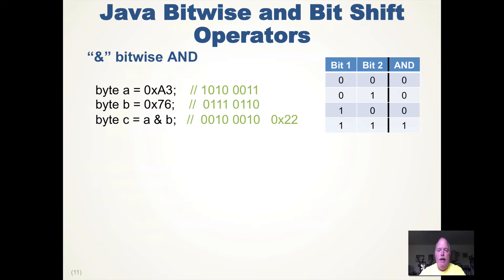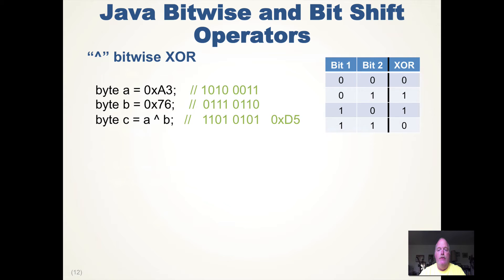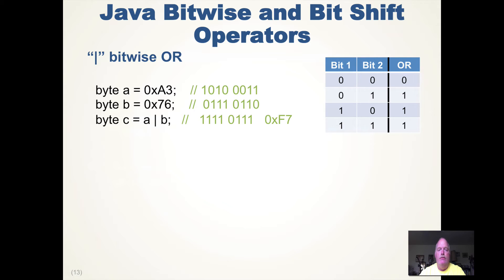The bitwise AND operator requires two 1s — false AND anything is false. Taking byte A and byte B and ANDing them gives C, where a 1 appears in the result only where both A and B have a 1. Exclusive OR (XOR) is similar but 1 XOR 1 equals 0 — it requires exactly one true value. Bitwise OR produces a 1 wherever there is a 1 in either input, as shown in the result of ORing A and B.